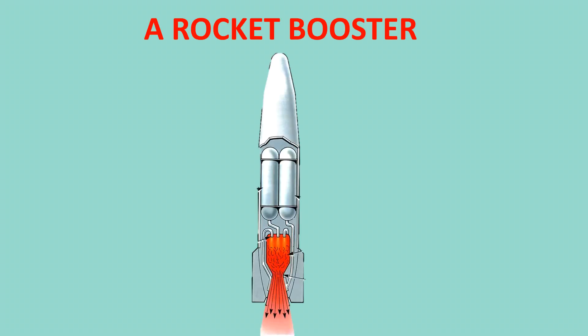A rocket is initially powered by rocket boosters. It contains two tanks, one with fuel and the other with oxygen as reactants, and a combustion chamber in which fuel is injected and combustion takes place. The product is gas with high enthalpy passed through a nozzle where it gains high kinetic energy, generating thrust for propelling the rocket.